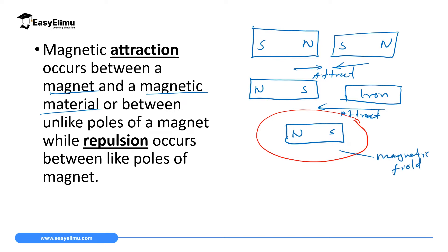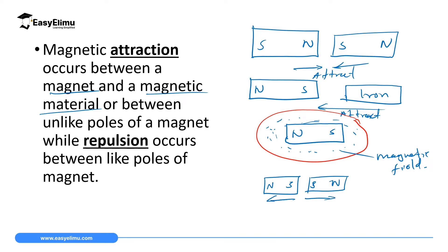If you bring any magnetic material close to the poles or across the area where we have a magnetic field, it will be attracted and pulled close to the magnet. Repulsion takes place between two like poles — for example north pole facing north pole, or south pole facing south pole — in both cases they will repel each other.